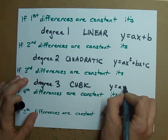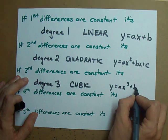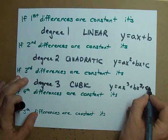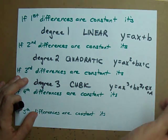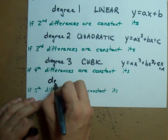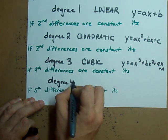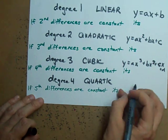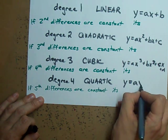Guess what? Fourth differences are for degree 4. We call those quartics and they are y equals ax to the 4 plus a bunch of other stuff.